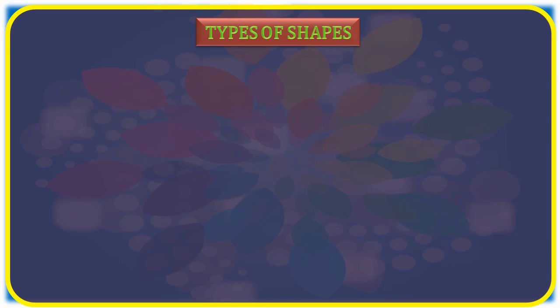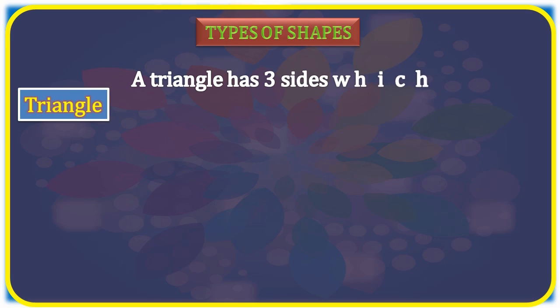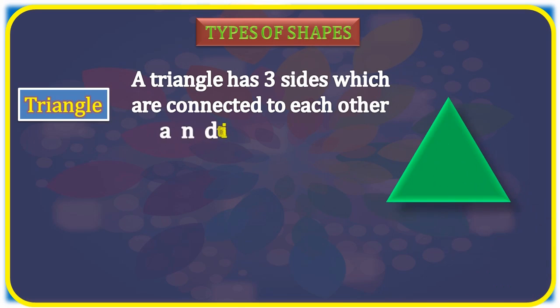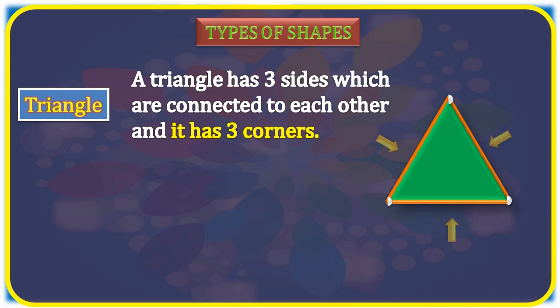First one is triangle. A triangle has three sides which are connected to each other and it has three corners. This is the example of triangle.